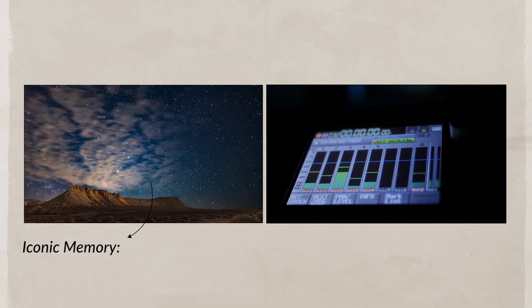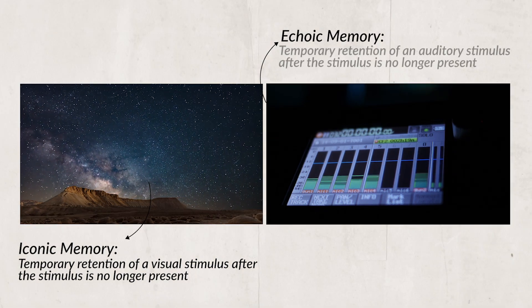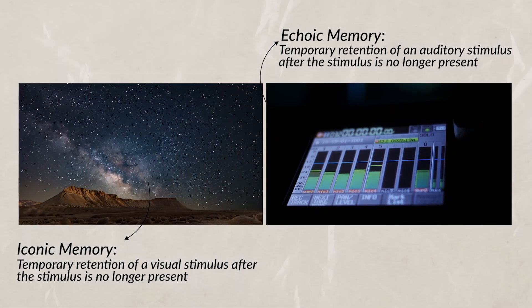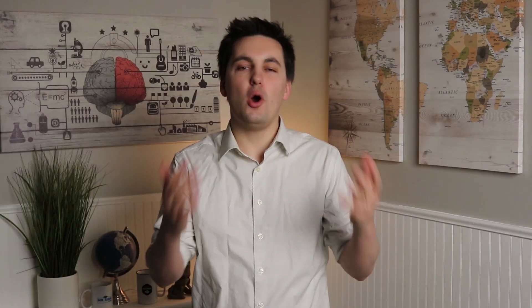Before we wrap up, I want to highlight two more concepts: iconic memory and echoic memory. Both are sensory memories, which are very brief. Iconic memory involves visual information, and echoic memory deals with auditory information — these memories only last for a few seconds. Iconic memory is part of the reason you can see the afterglow of a sparkler after someone moves it back and forth. Echoic memory is why, even if you're not actively listening to people talking around you, you can probably recite the last sentence they said — it's because of your sensory memory.